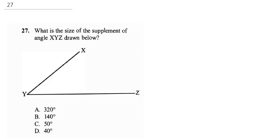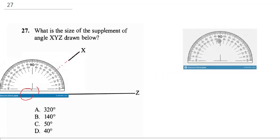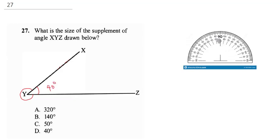The next question asks: what is the size of the supplement of angle XYZ? Using a compass on the paper to measure the angle, the measurement comes to 40 degrees. To get the supplement, it is going to be 360 minus 40 degrees, which gives 320 degrees. The correct answer is A.